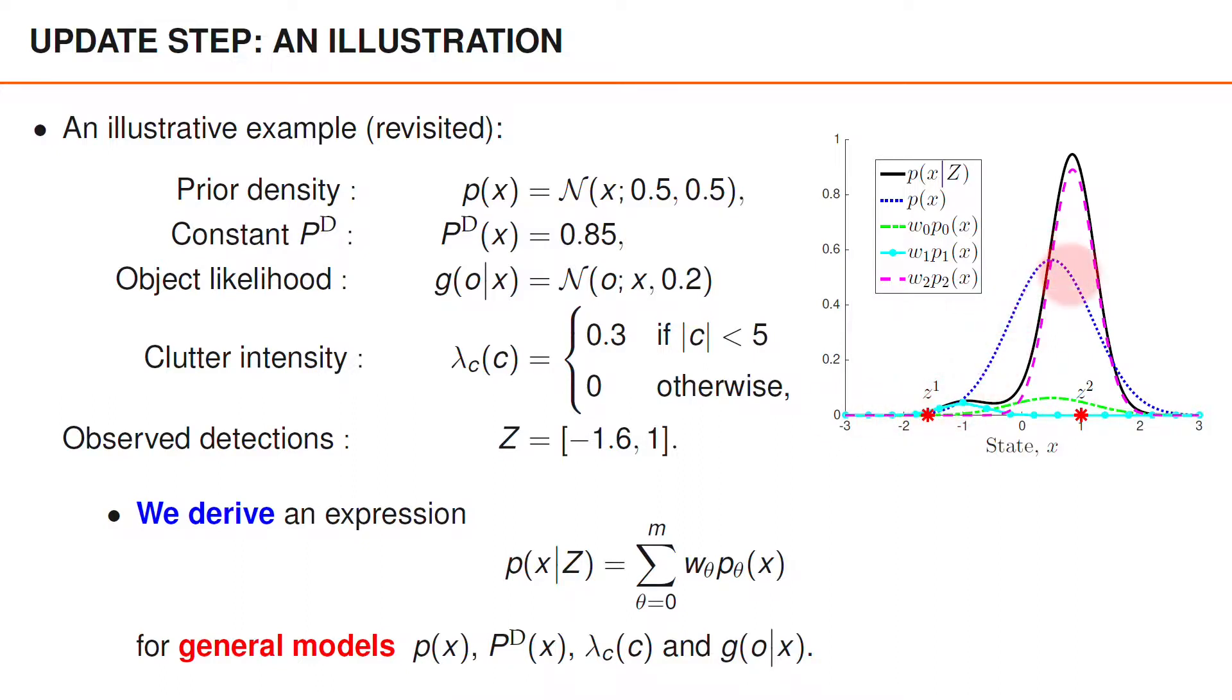In the figure, we visualize the prior using a blue dotted curve. The contribution from the hypothesis that the object is undetected is the green point dashed curve. The contribution from the hypothesis that Z1 is an object detection is the cyan-colored curve with circles, and the contribution from the hypothesis that Z2 is an object detection is the magenta-colored dashed curve.